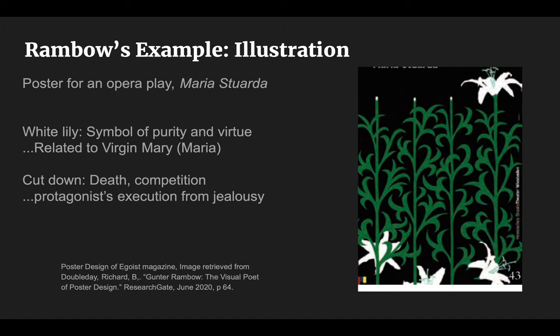This is a new style for Rimbaud — using illustration instead of photography. It was created for an opera called Maria Stuarda. White lilies in the Christian world are a symbol of purity and virtue, often associated with Mary or Maria the Virgin. Cutting the flower narrates the unjust execution of Maria Stuarda due to the false charge of a jealous queen who wanted to eliminate her competitor. However, only one lily, a symbol of innocence, remains — which contradicts the story because Maria was the one who was cut off. As Rimbaud said, he designed narrative posters but also allowed room for viewers to ponder and interpret meaning, producing new insights.